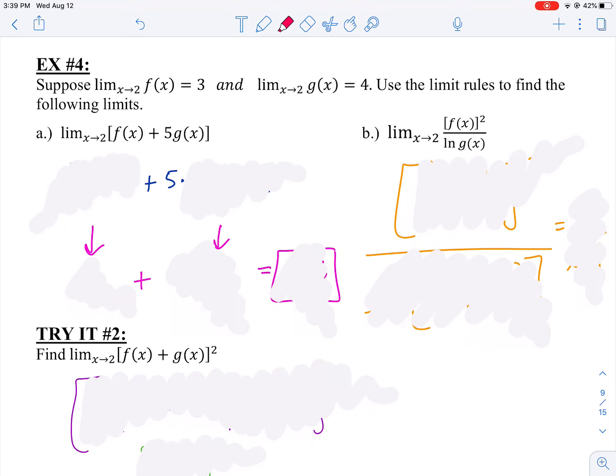It says here, suppose the limit as X approaches two of F(X) is three. So they already told you the limit for F(X), it's three. And the limit as X approaches two of G(X) is four. Use the limit rules to find the following limits.